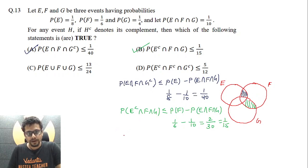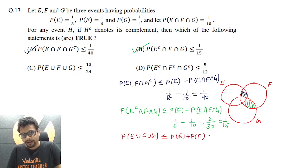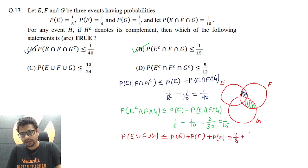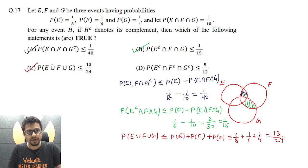Coming to option C: probability of E union F union G is definitely less than or equal to probability of E plus probability of F plus probability of G. This becomes 1/8 plus 1/6 plus 1/4. Taking LCM of 24: 3 plus 4 plus 6 equals 13. So this is 13/24. This expression is less than or equal to 13/24. So option C is also correct.